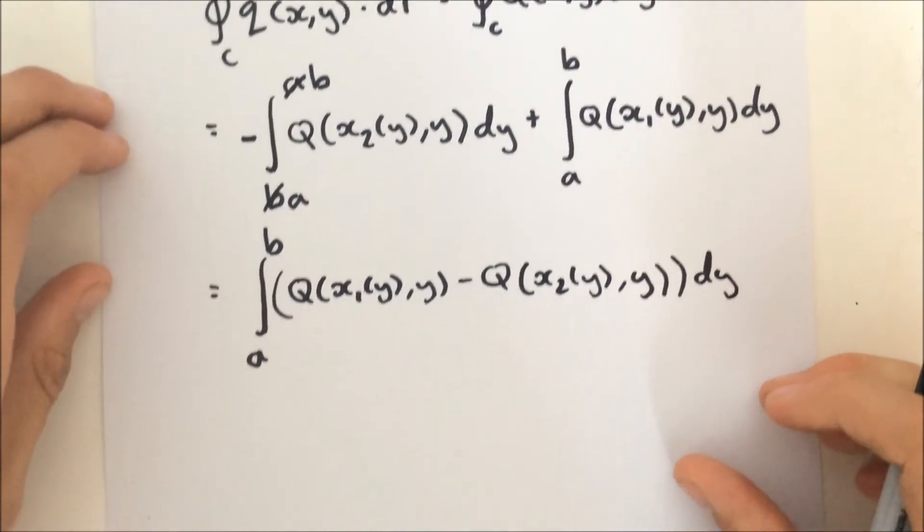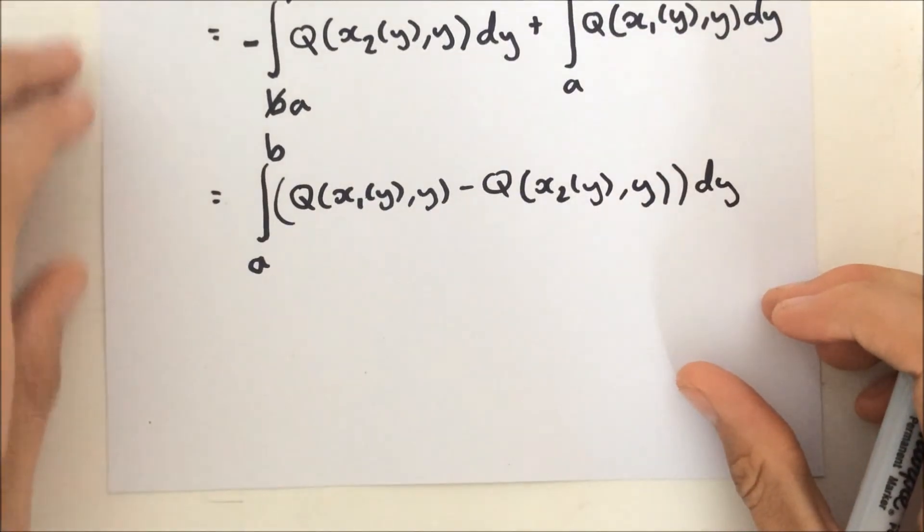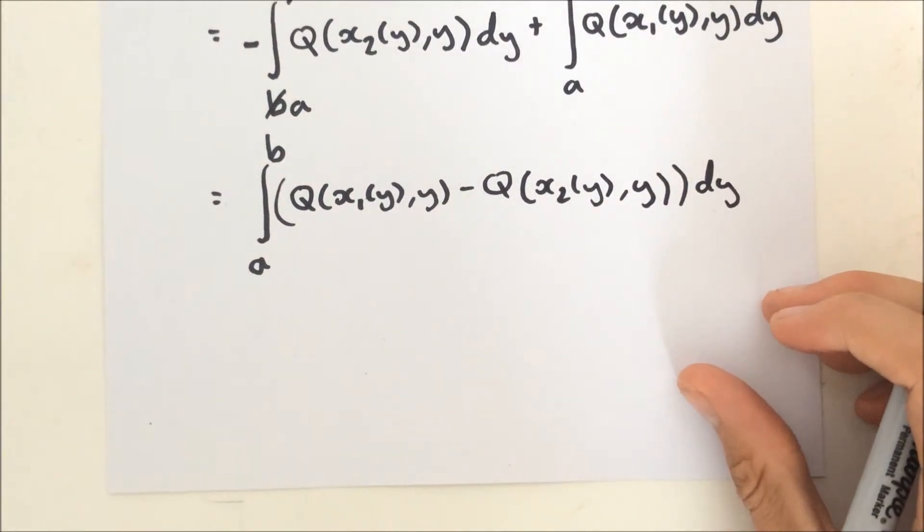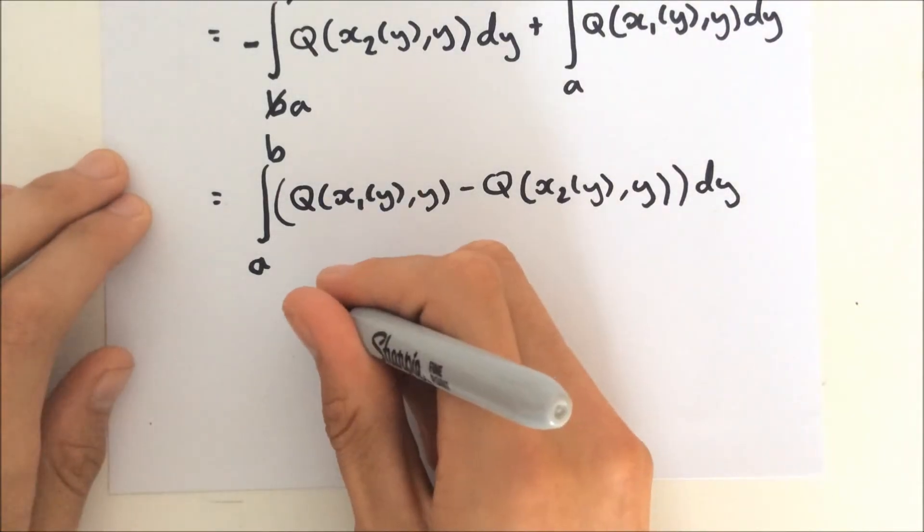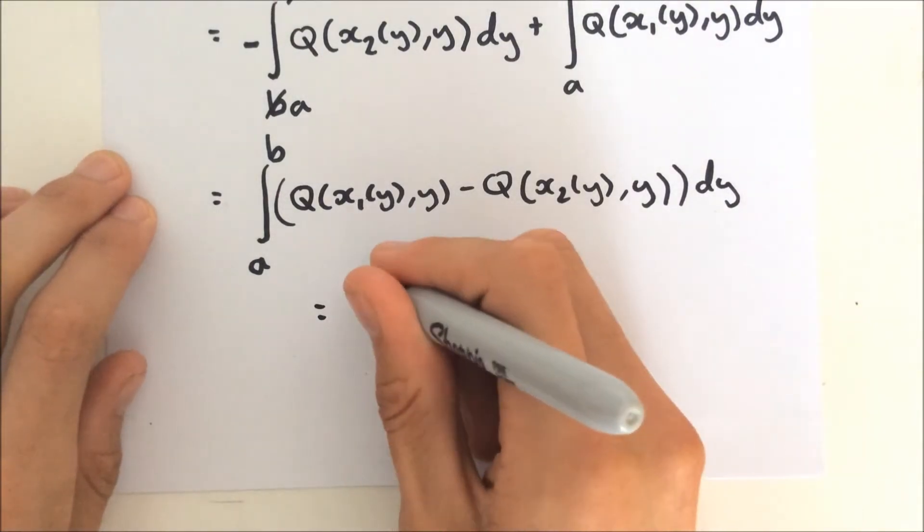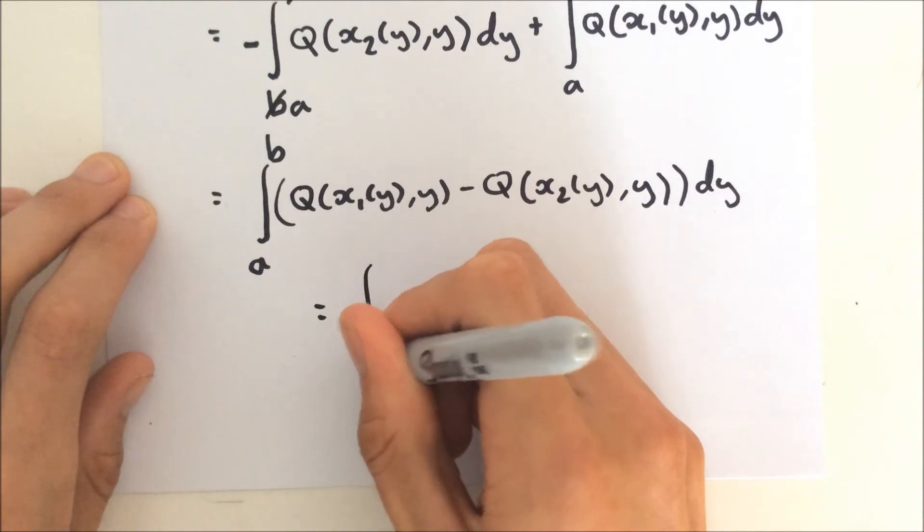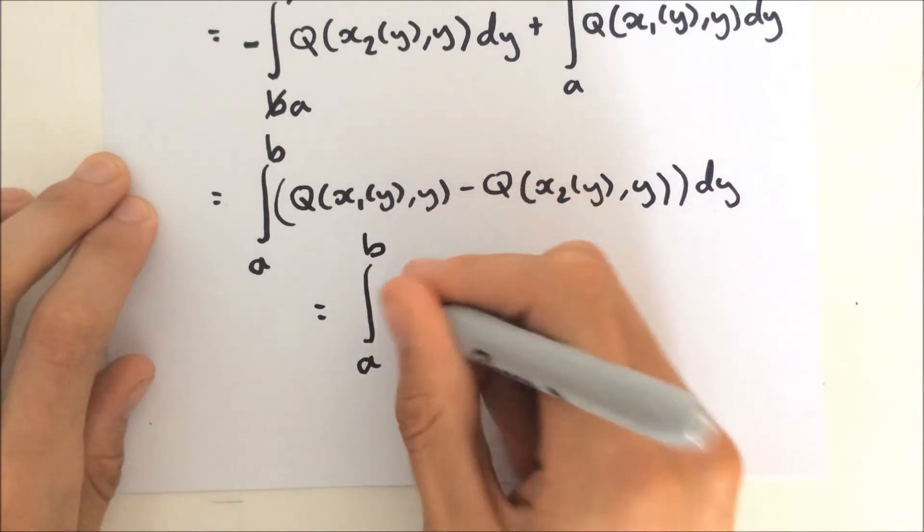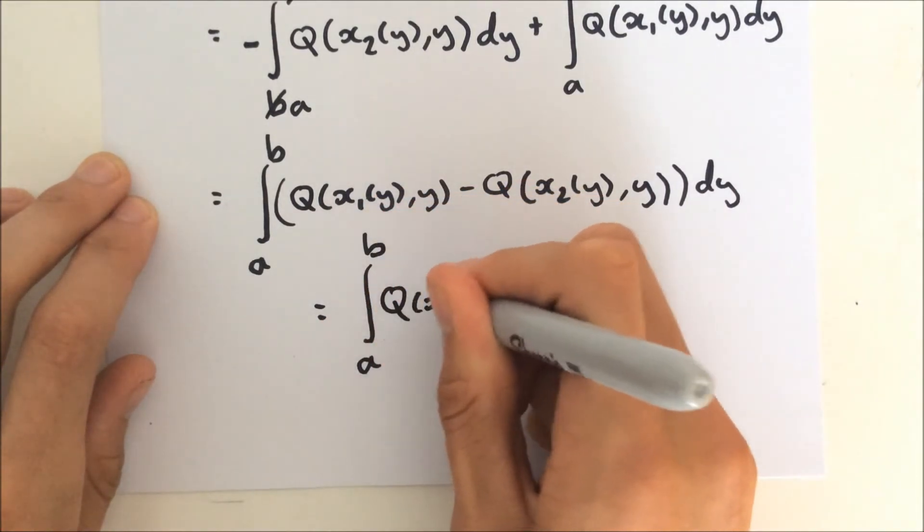So it's following a similar progression as we did in the last video, and I think I don't need to explain, but this, again, is equal to the integral from A to B of Q of xy, and of course, we're going to evaluate this, as you can guess.